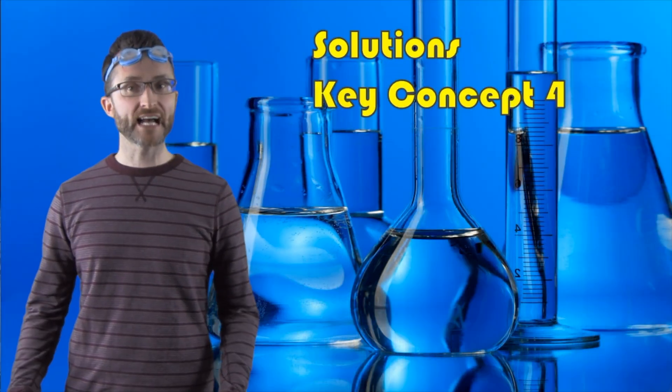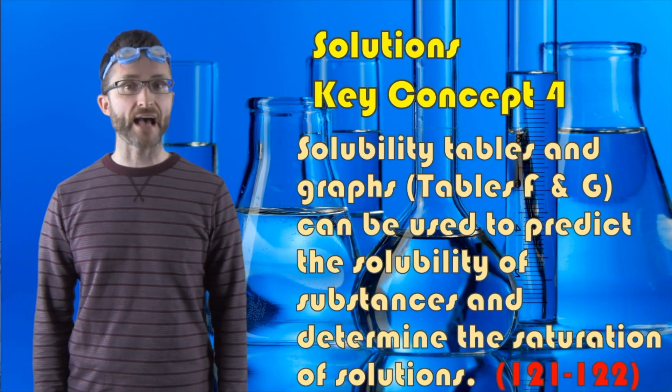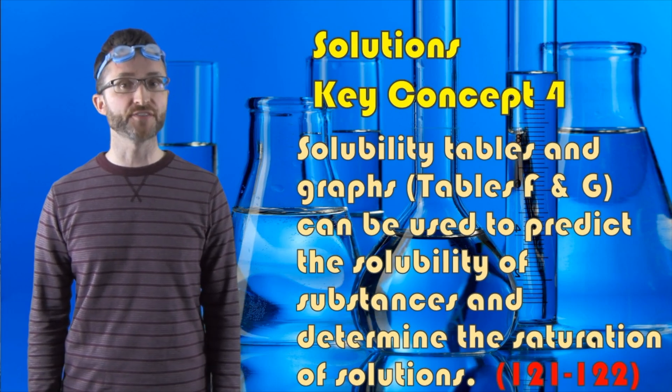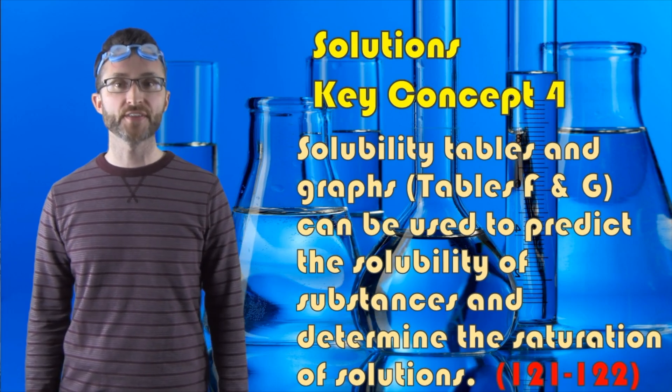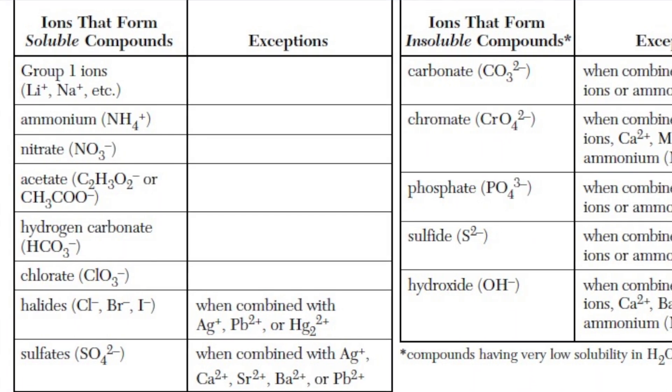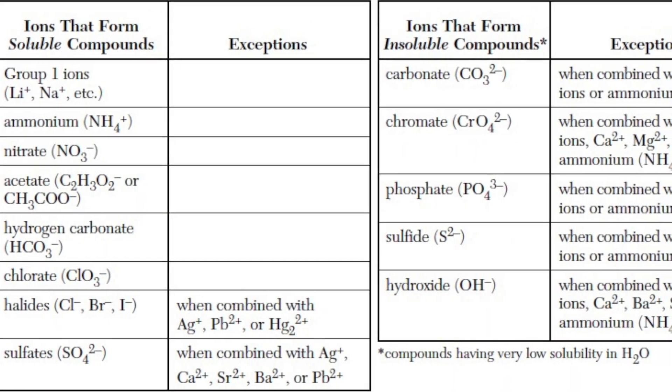Solutions, key concept four. Solubility tables and graphs, tables F and G, can be used to predict the solubility of substances and determine the saturation of solutions. Taking a look at table F, on the left-hand side, we have soluble substances, which means that they are aqueous.